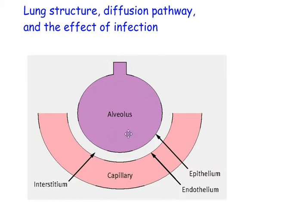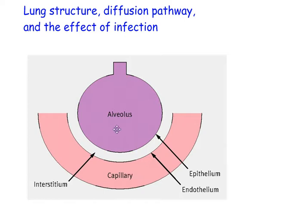What we have in this diagram is an alveolus — a little air sac in the lung that fills with fresh air with 20% oxygen. The oxygen diffuses across this pathway through the alveolar wall, the capillary wall, and is then collected by red blood cells in the capillary as they move through. However, this diagram is too simplistic to help you understand the effect of infection.